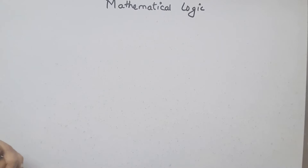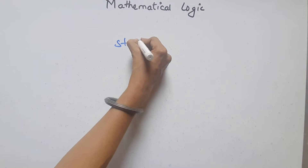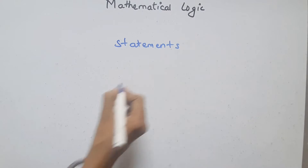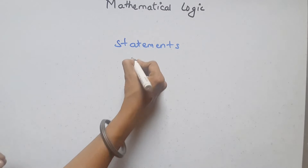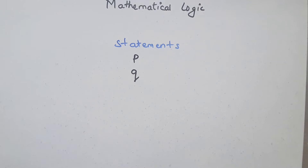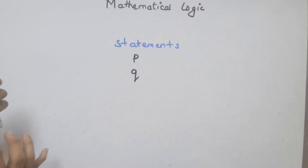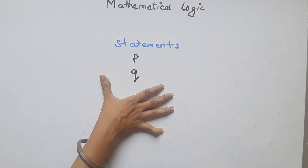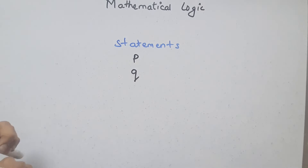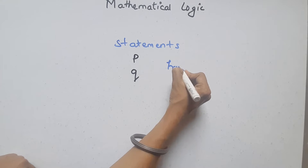Logic is a chapter which is based on two things. The first thing is statements, and we denote statements with the help of symbols like P and Q. If statements are connected with words such as AND, OR, or BUT, we have symbols for those also. The first part of the chapter is based on statements and symbols, and the second part is based on the truth value of the statements — whether they are true or false.